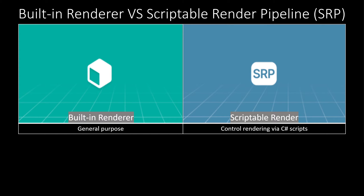Let's start with the built-in renderer versus the Scriptable Renderer Pipeline or SRP. Unity has a built-in renderer which is the default renderer in the 3D template. It is a general purpose renderer that cannot be optimized for each specific need to produce the best graphics. To fix this issue, Unity introduced the Scriptable Renderer Pipeline or SRP, a feature that allows you to control rendering via C-sharp scripts.